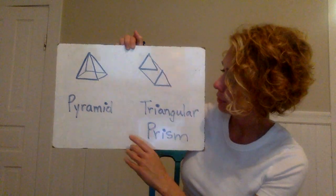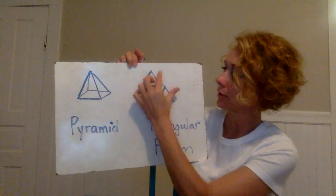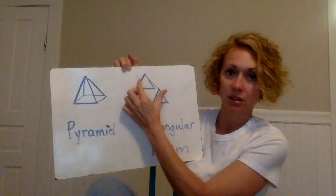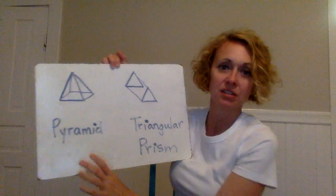Look visually at the two-dimensional drawings. Triangular prism has two triangles that are parallel. They don't touch one another and the pyramid has triangular faces that touch at the top.